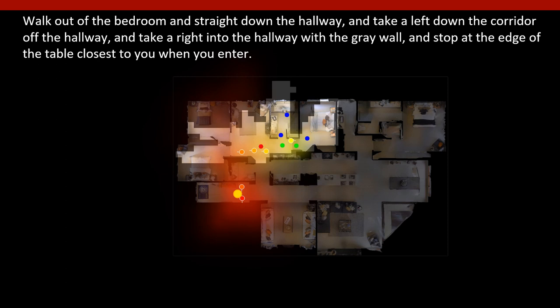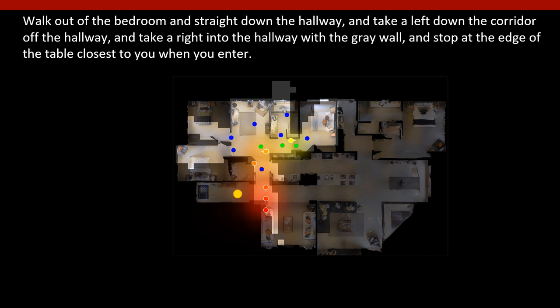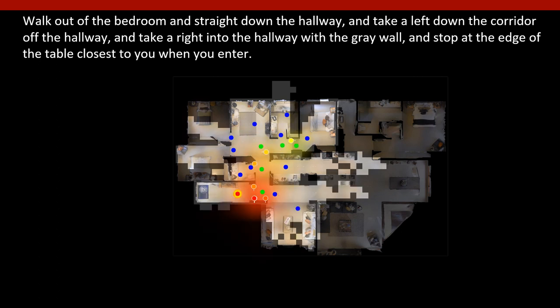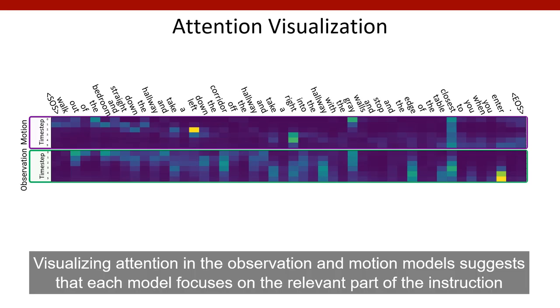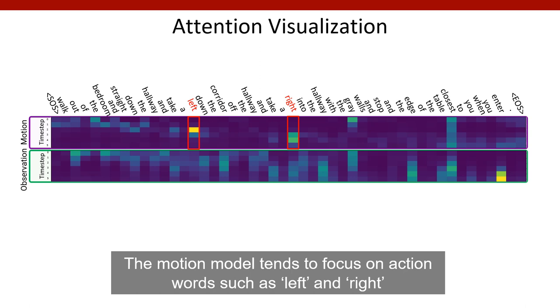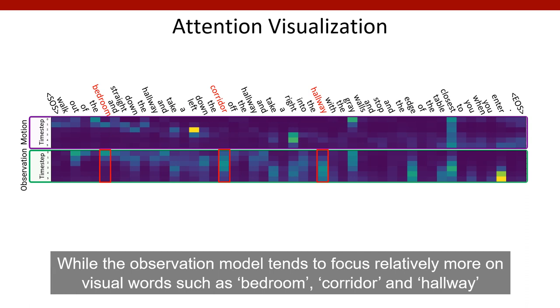This process of moving, updating the map, and re-computing the belief over trajectories that might lead to the goal continues until ultimately this belief coincides with the true goal location. Visualizing attention in the observation and motion models suggests that each model is focusing on the relevant part of the instruction. The motion model tends to focus on action words such as left and right, while the observation model tends to focus relatively more on visual words such as bedroom, corridor, and hallway.